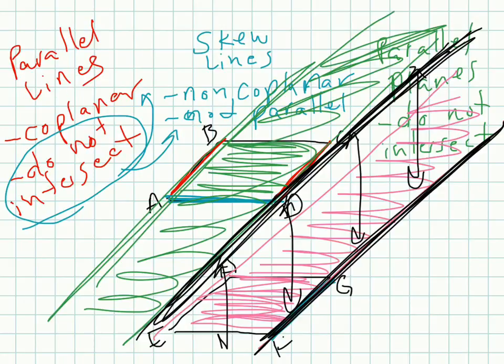Just to recap it again, parallel lines exist on the same plane. They're coplanar. They do not intersect. Skew lines, non-coplanar. They need to exist on different planes. They also do not intersect. Lastly, parallel planes. If you're looking at two planes now, that would never intersect. Hope you had fun with this. Go ahead and answer the questions in your workbook, and then I'll talk to you soon. Thanks.